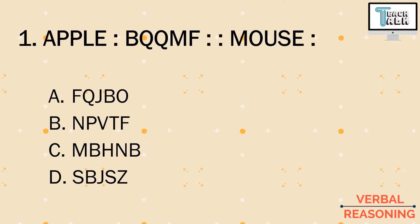Number one: if apple is to bqqmf, mouse is to blank. Options: a) fqjbo, b) npvtf, c) mbhnb, or d) sbj. Using this analogy, we can notice that letter A is paired with B, letter P is paired with Q, P again is paired with Q, letter L is paired with M, and E is paired with F. It's like the pair of each letter is the letter after it in the alphabet. So using that analogy, what should be paired with mouse — the letters M, O, U, S, E?